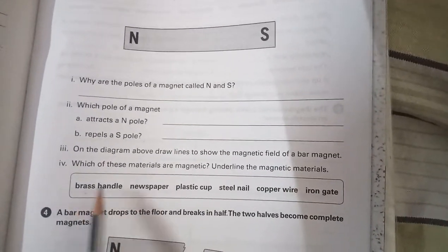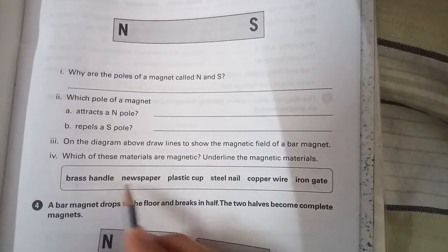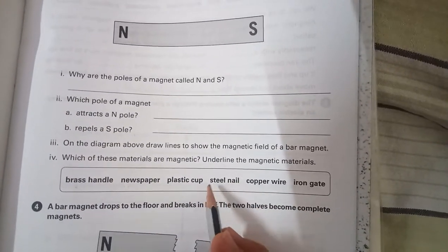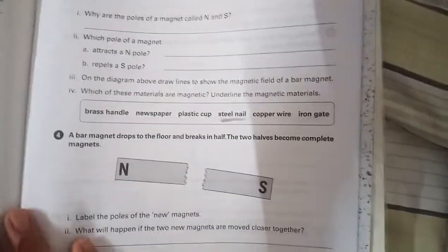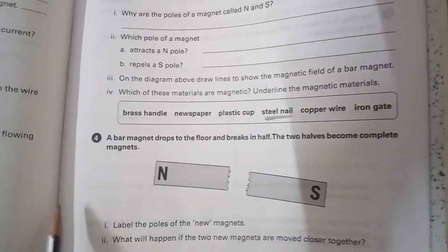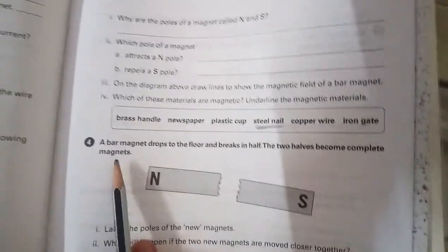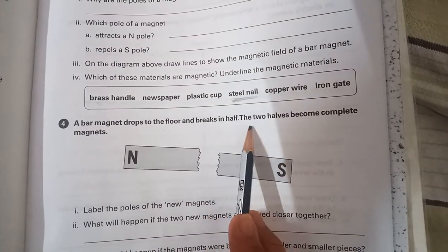Which materials are magnetic? You have to highlight. Is newspaper a magnetic material? No. Plastic cup? No. Steel nail? Yes, it is a magnetic material, so you have to draw a line below that. Brass handle, so you have to tell whether is it magnetic or not.